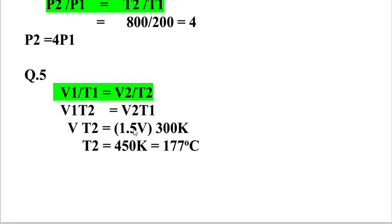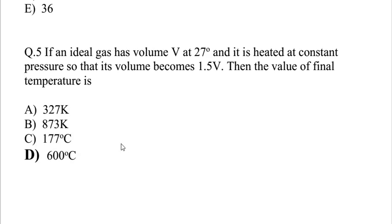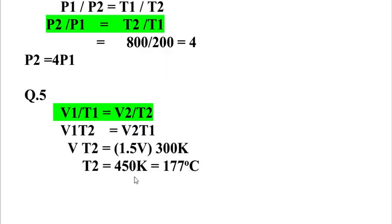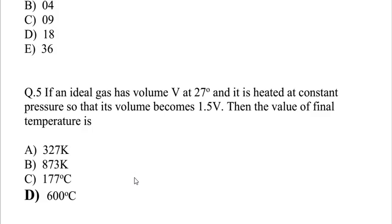V cancels out, so T2 equals 1.5 times 300 Kelvin, which is 450 Kelvin. But in the options, 450 Kelvin is not there. We have 327 Kelvin, 600 degrees centigrade, 873. However, 450 Kelvin minus 273 equals 177 degrees centigrade. So C is our correct option.